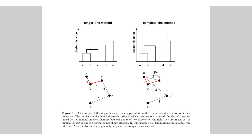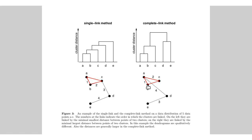For the complete link method, this one link is not sufficient, because another link between C and the other point in AB is still missing. When we draw the next link — the next nearest data points — that doesn't make a difference in the single link method since A, B, C already belong to one cluster. But it does make a difference for the complete link method, because now points A and B are completely connected with point C. So we take C as a third point, connect them, and this distance is the cluster distance. In the complete link method the cluster distance is therefore higher than in the single link method.